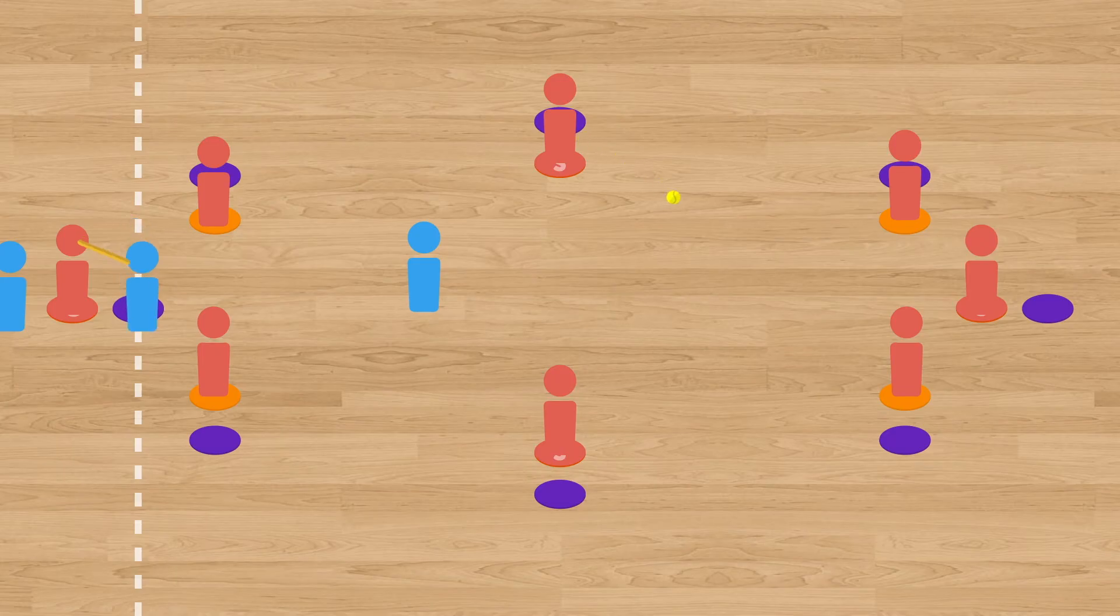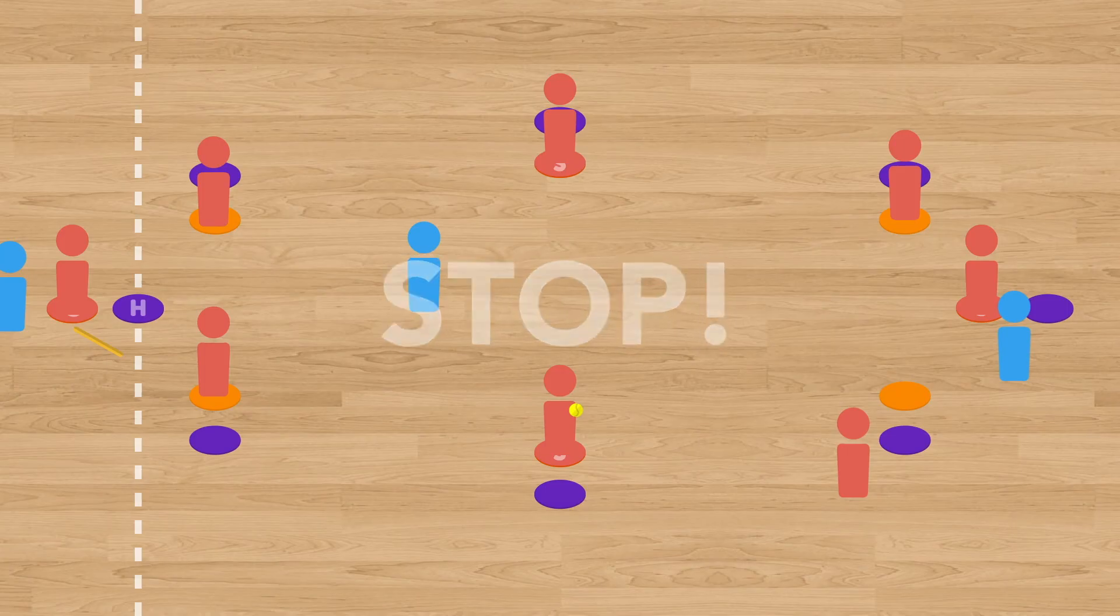Once the player successfully strikes the ball, they begin to make their way around the bases until the fielding team manages to get the ball to a stop spot and call stop. Once stop is called, the player returns to the last base that they touched.